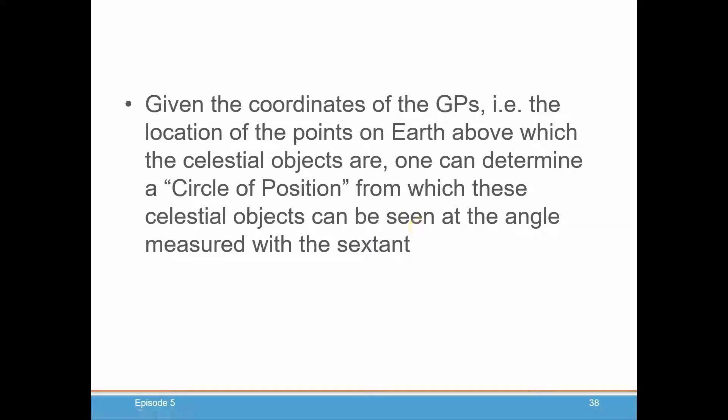Once you know the coordinates of the GPS, the location of the points on Earth above which the celestial objects are, this determines a circle of position from which these celestial objects can be seen at the angle that's measured with the sextant.